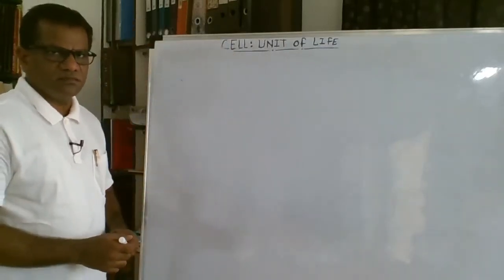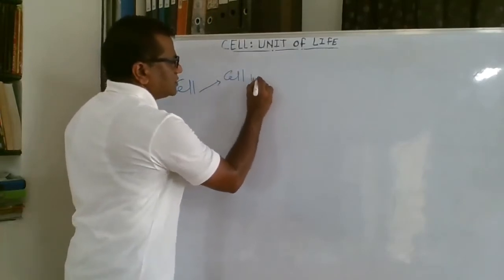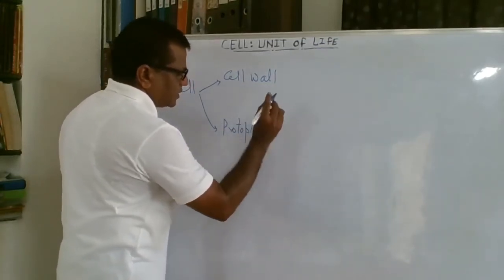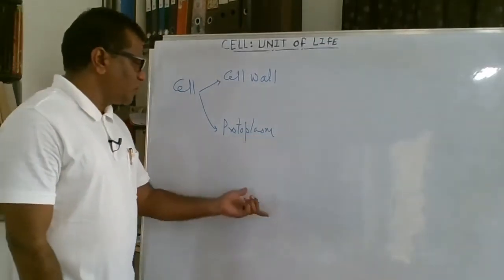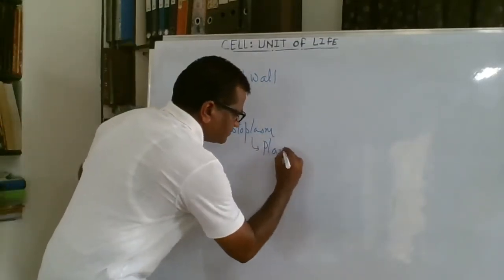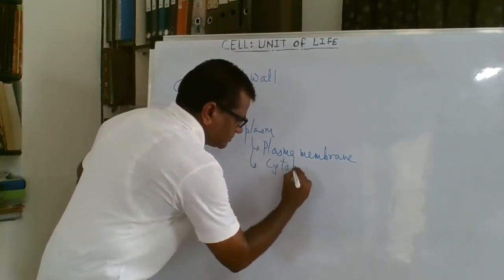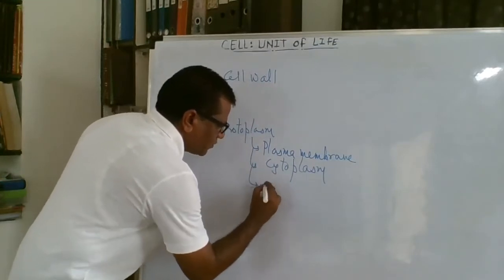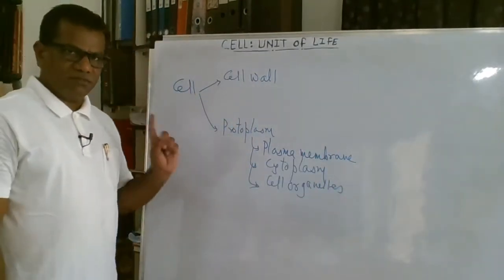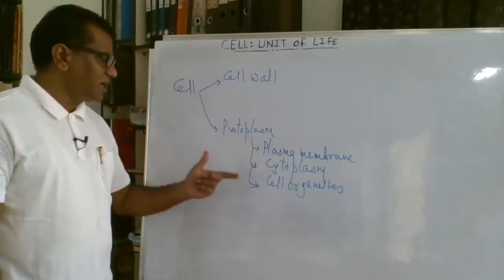The cell is made up of two basic things: cell wall and protoplasm. This protoplasm consists of three components — the first is plasma membrane, the second is cytoplasm, and the third, most important, is cell organelles. So the cell is made up of cell wall and protoplasm, and protoplasm contains plasma membrane, cytoplasm, and cell organelles.